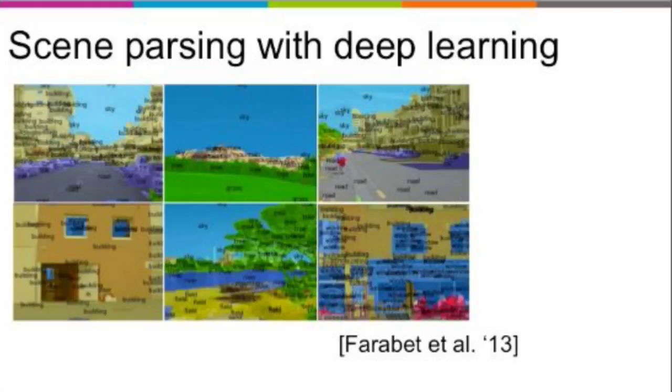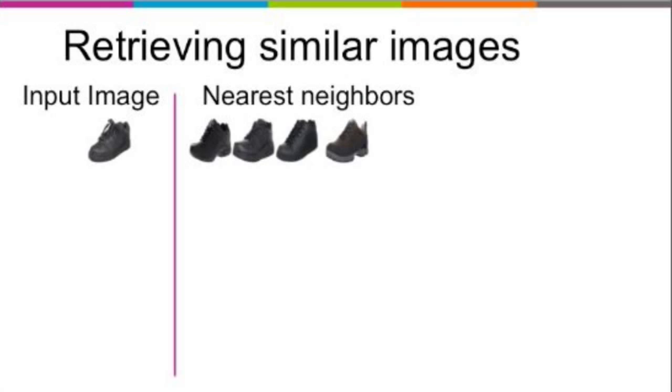Other types of computer vision applications using deep learning include scene parsing — given an image, labeling areas as water, grass, sky, house, tree, and so on. Another very interesting application is given an image, finding similar images based on their content. This is a different task because it's unsupervised — you have a large collection of images, you don't know what's inside them, and you just want to find similar ones.